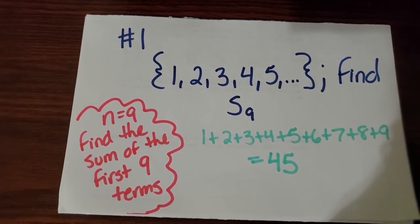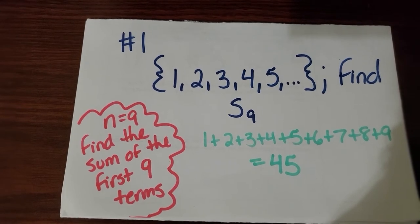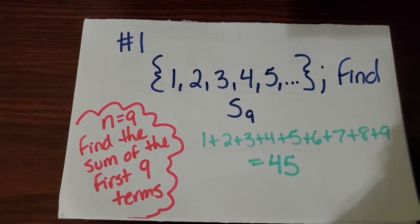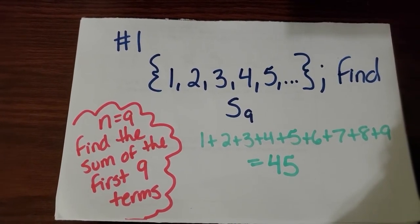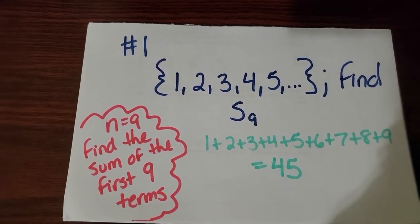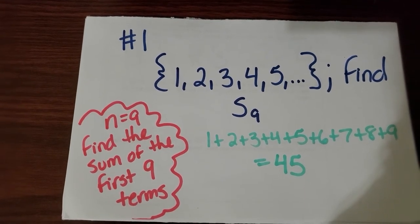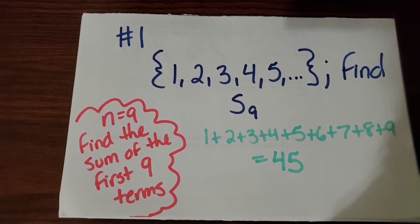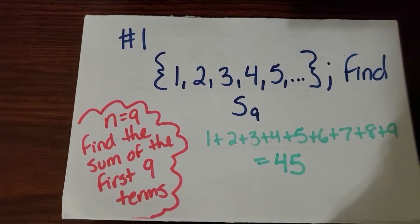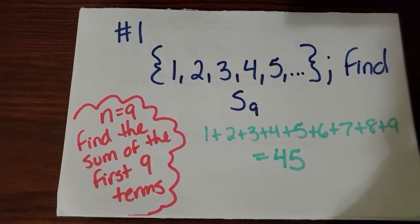In question 1, we have to find the partial sum for the sequence 1, 2, 3, 4, 5, and it continues on. And we have to find S9. That means that we're looking to add up the first nine terms of the sequence. And if we were to add up the first nine terms of the sequence, we would get a sum of 45.